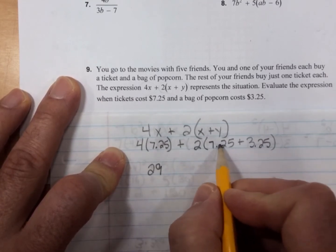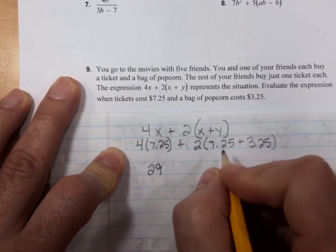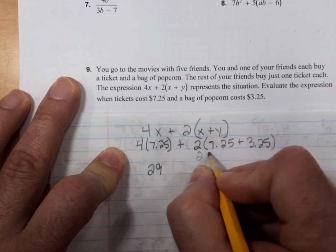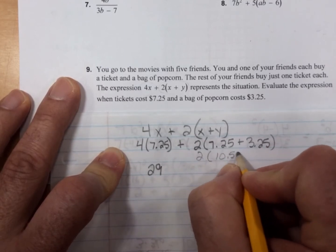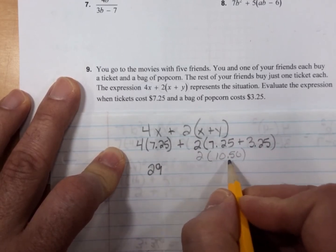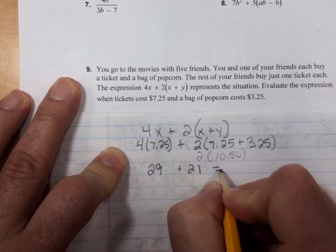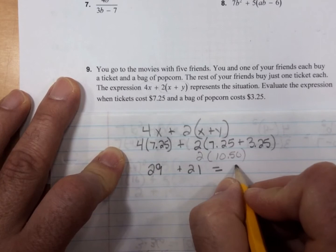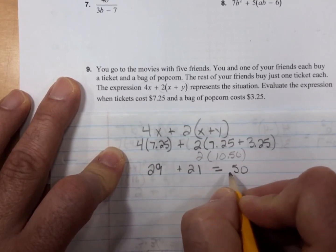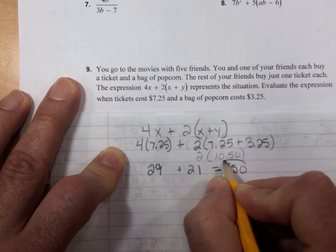4 times $7.25 is $29. And adding these together first, you get $10.50. So 2 times $10.50 is $21. And $29 plus $21 is $50. $50.00 is what you have to pay for all of you.